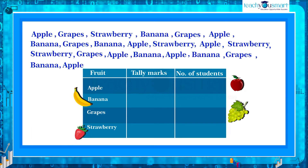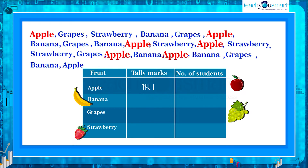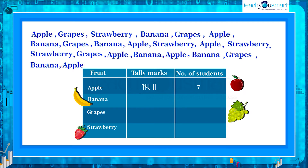How many students like apples? Let's count: one, two, three, four, five, six, seven. There are seven students who like apples. In the same way, let us count the number of students who like bananas: one, two, three, four, five, six.